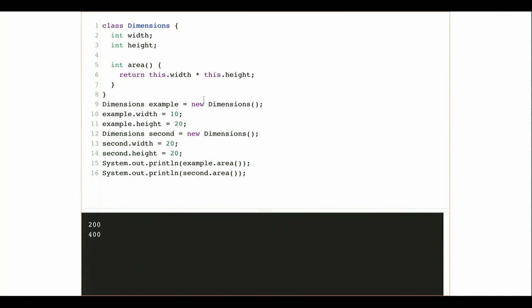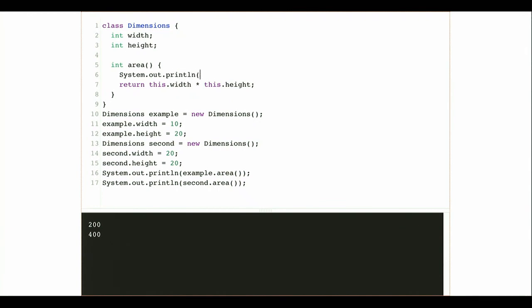The reason for this is that instance methods have access to the instance variables and the values defined on that instance of the class. When my first Dimensions calls `area()`, the width value is 10 because I set `example.width` to 10. The second time I call `area()` I'm calling it on `second`, which is a separate instance with its own width and height — so width is 20. These are two completely different objects with completely different attributes. The method works on any instance of Dimensions but has access to the instance variables defined on that specific instance.